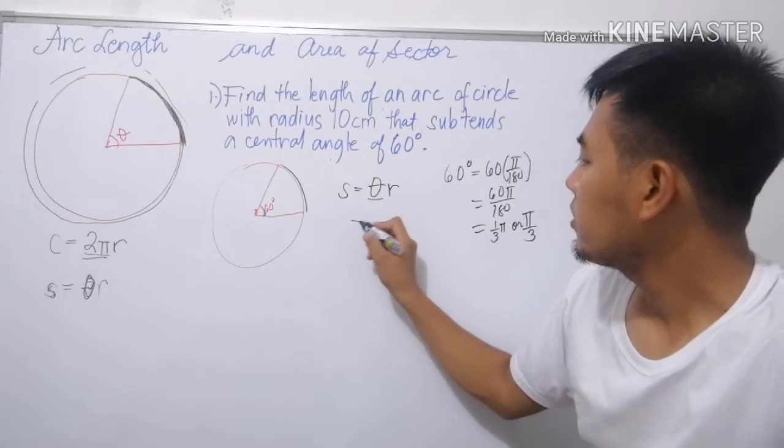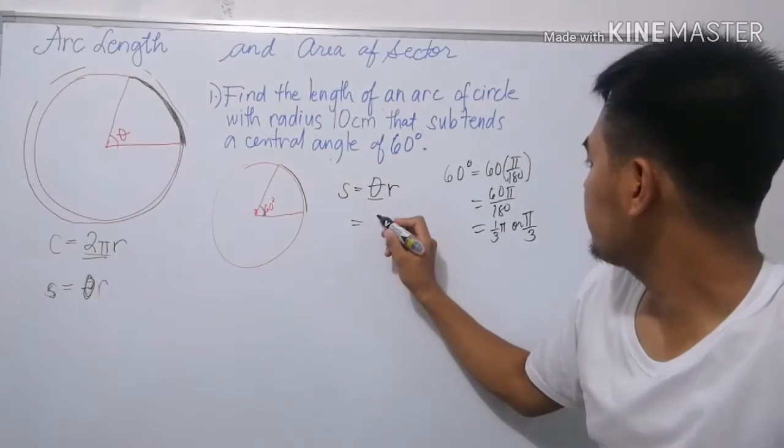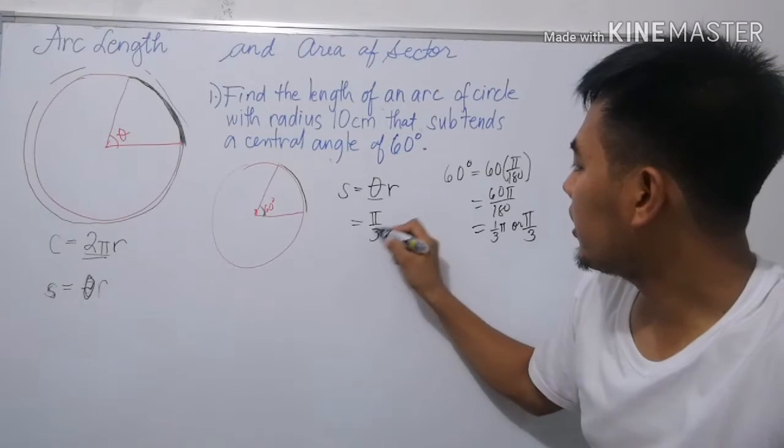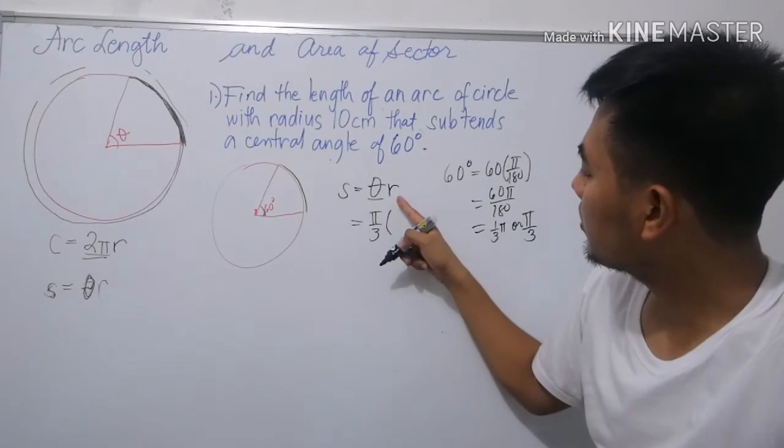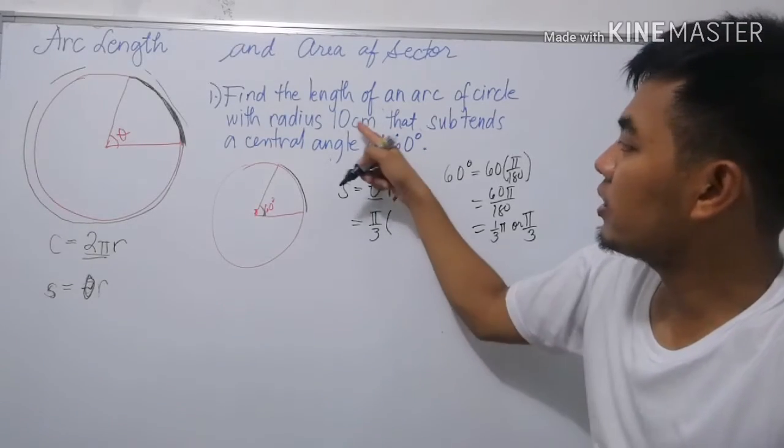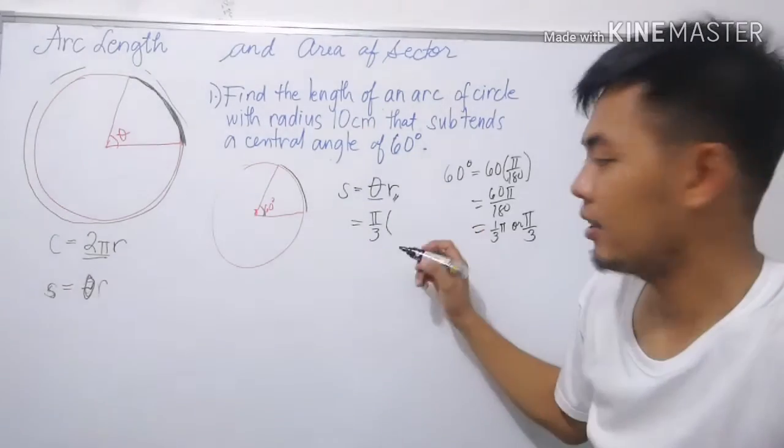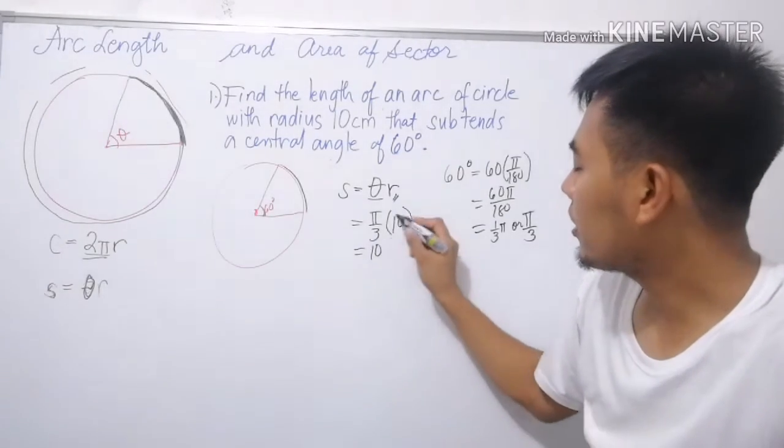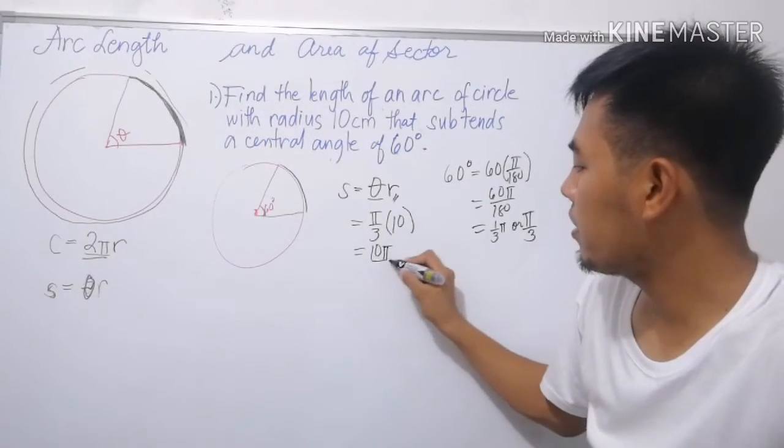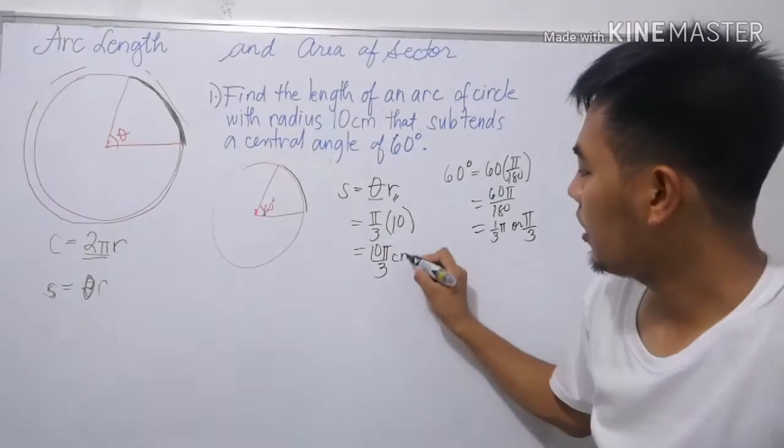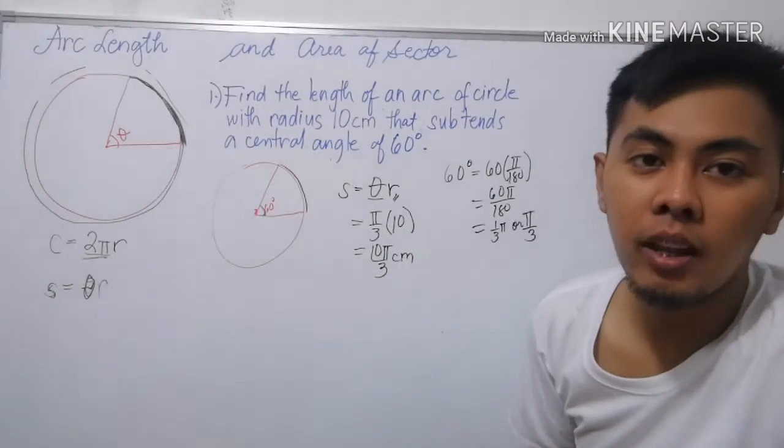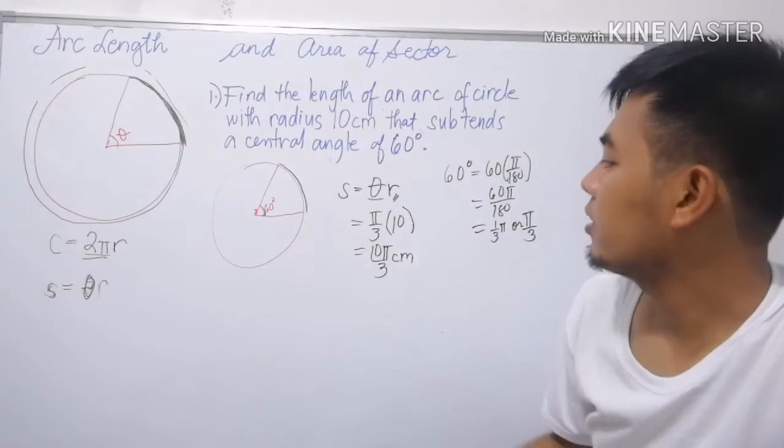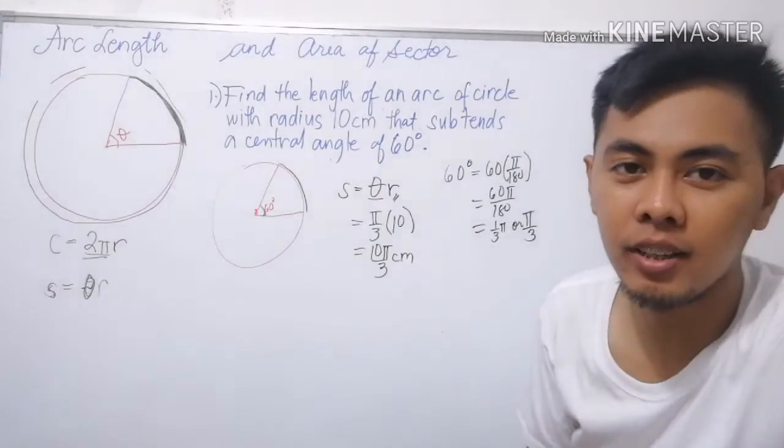So the arc length is π over 3 times the given radius which is 10. We have 10 times π which is 10π over 3. The unit is cm, so the length of the arc is 10π over 3 cm.